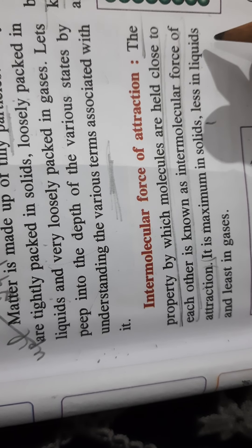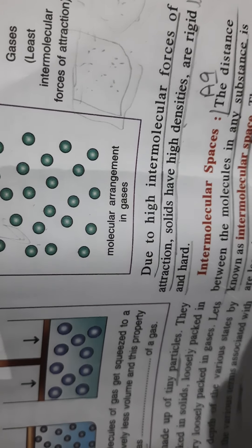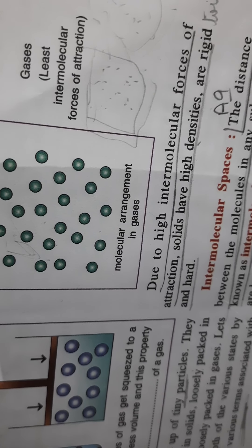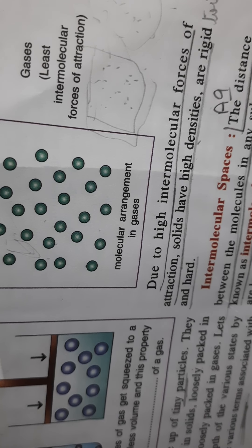The intermolecular force of attraction is less in liquids compared to solids because the molecules are loosely packed, so there is space between the molecules which weakens the force of attraction. In gases, the molecules are very far from one another, so the force of attraction is very less. In the molecular arrangement: solids have the highest intermolecular force of attraction, liquids have less, and gases have the least intermolecular force of attraction.